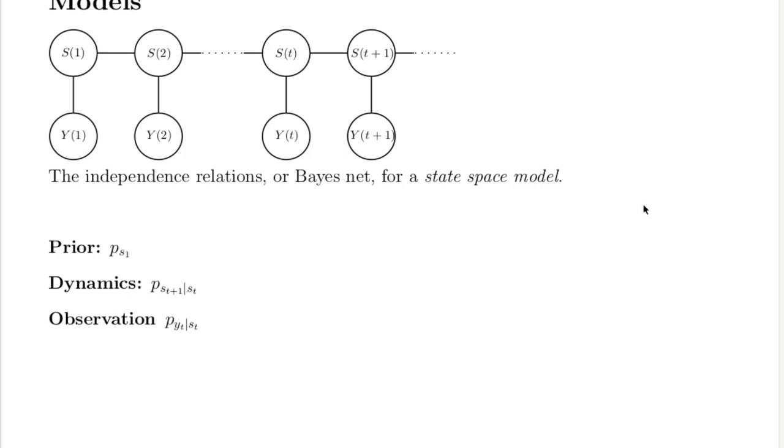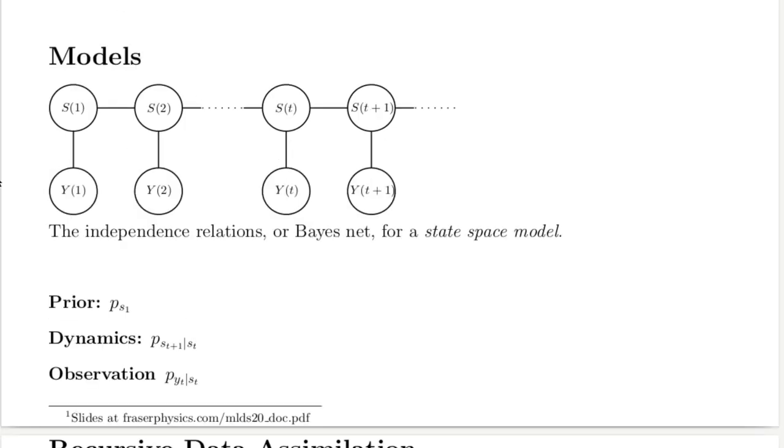Independence assumptions make up the essential structure of models that are used for data assimilation. They're illustrated by this Bayes-Net drawing. The key idea is that given the state at a particular time, earlier and later values are conditionally independent of each other. Combining a prior for the distribution of the first state, the state transition probability function, and the observation probability function completes the specification of the model.